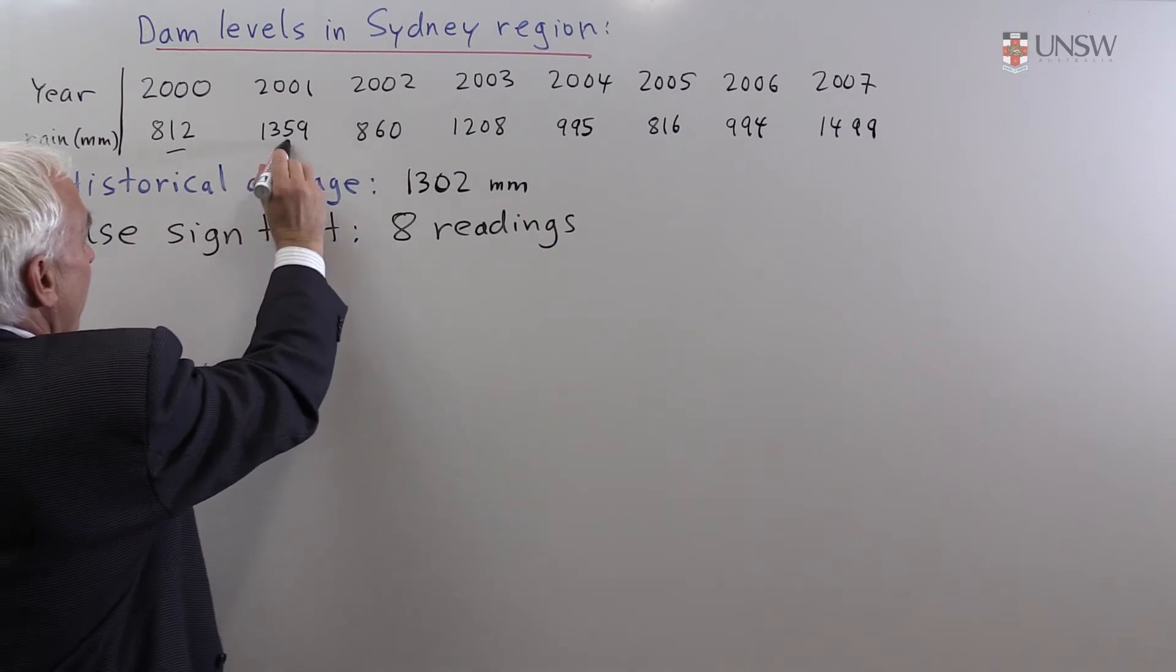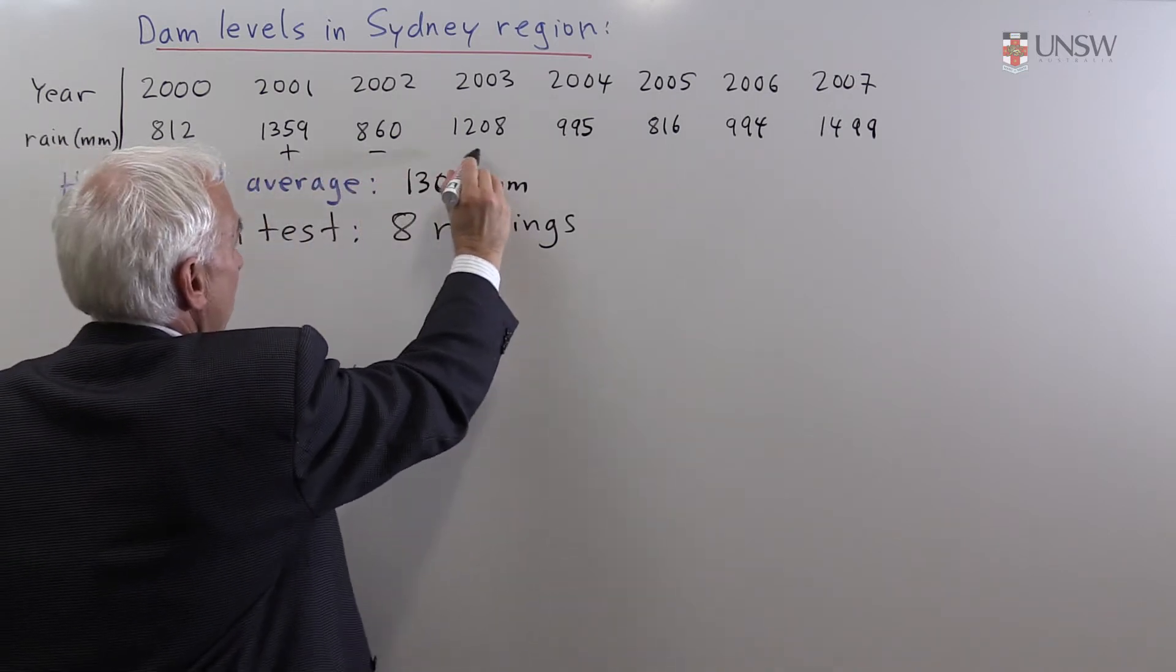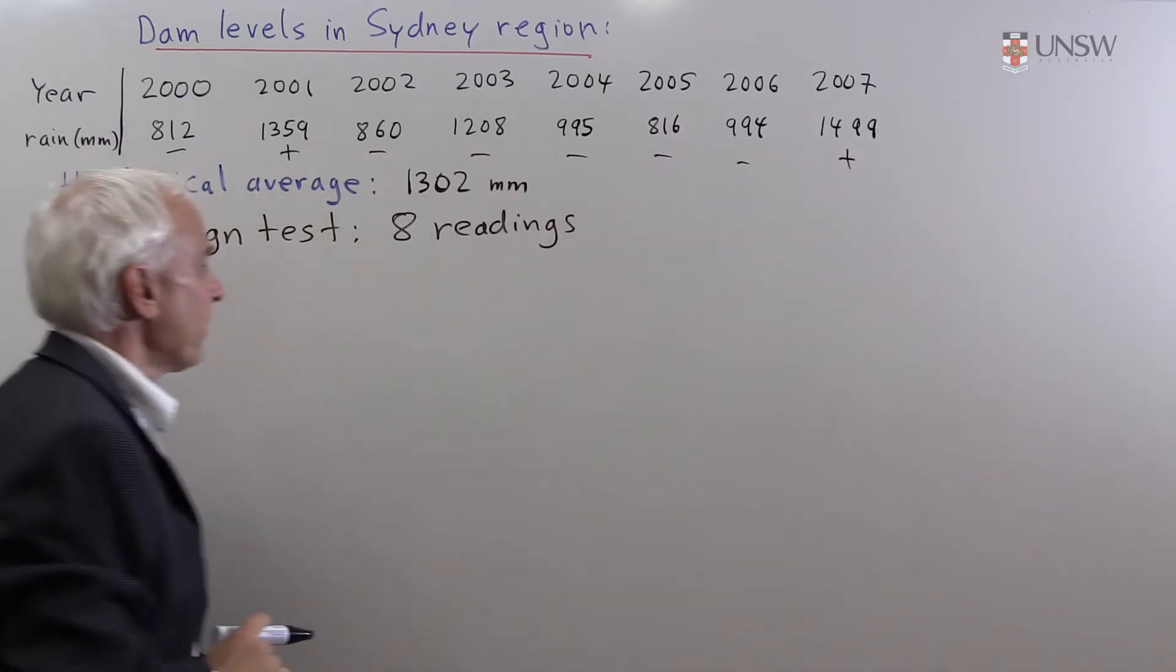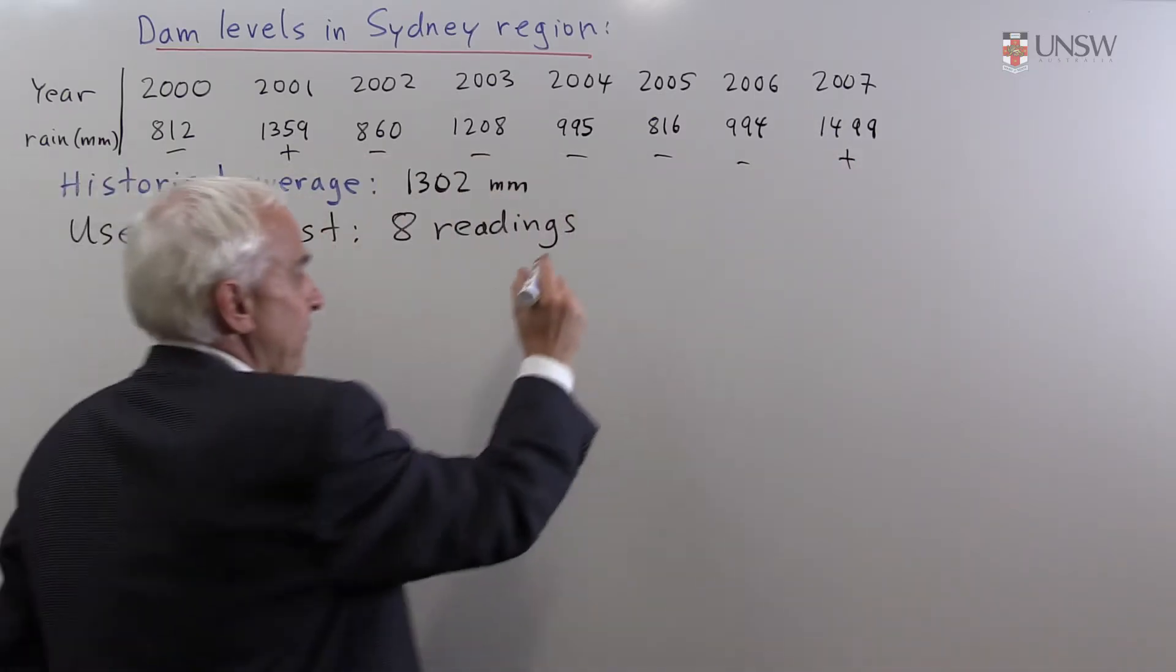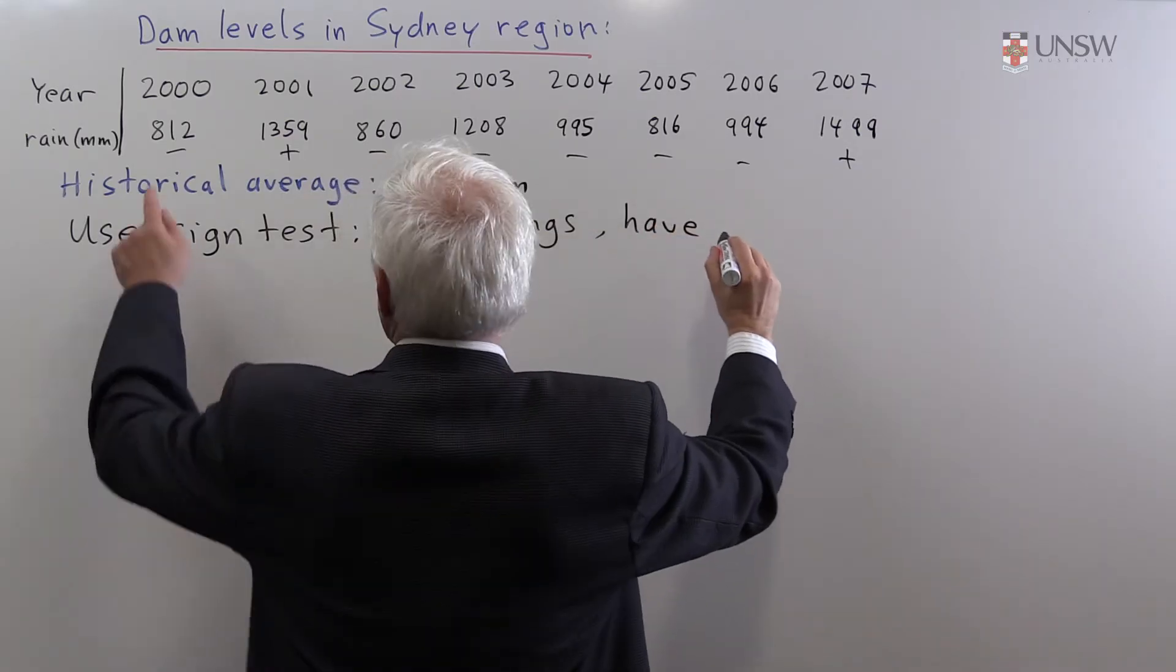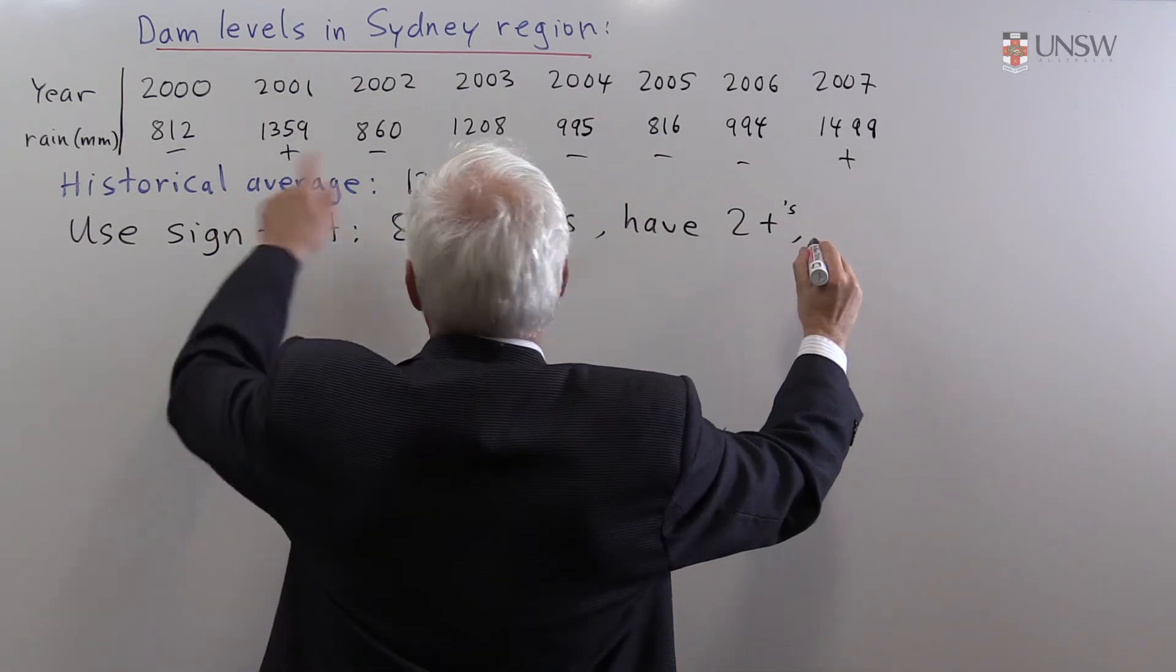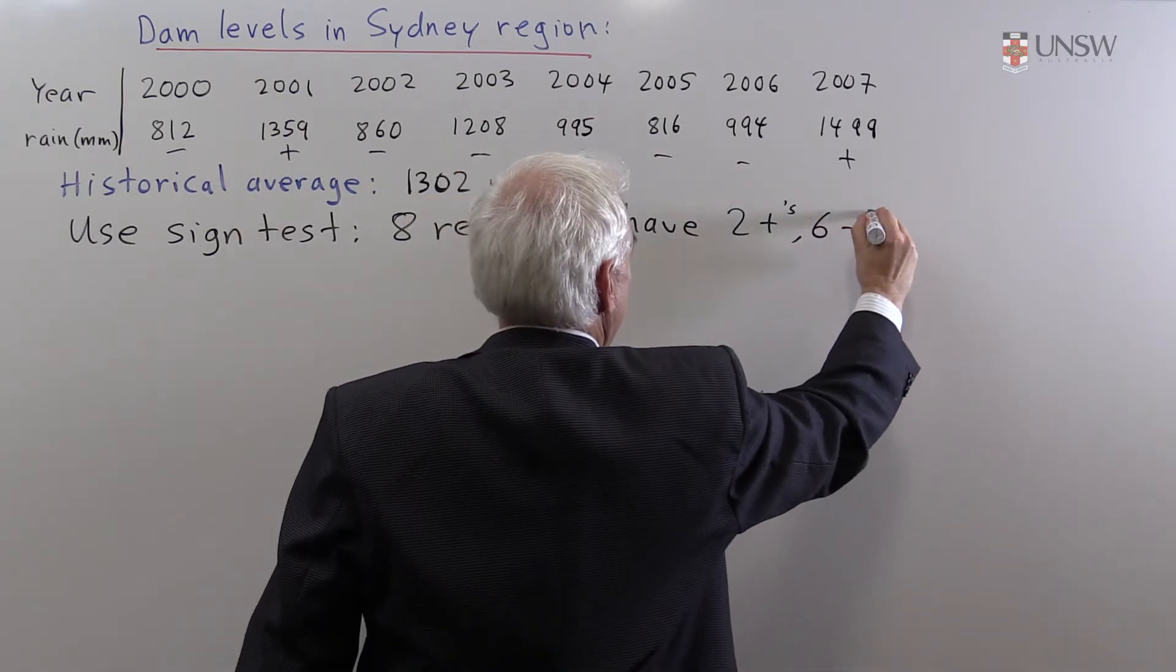this is below, this is above, this is below, below, below, below, below. And this one is above. So out of the eight readings, we have two pluses and we have six minuses.